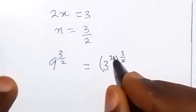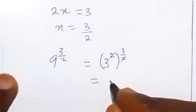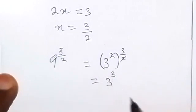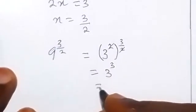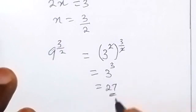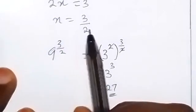So 2 can cancel 2 from here and what we have is 3 raised to power 3. And of course 3 raised to power 3 is 27, so therefore the value of x here is 3 over 2.